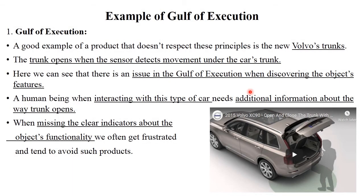Before taking one example of Donald Norman's model, let's look at an example of the gulf of execution and gulf of evaluation. These are the most important terms in Donald Norman's model. Here is an image of a new Volvo trunk. The trunk opens when the sensor detects movement under the car's trunk. This example does not fulfill Donald Norman's rule.